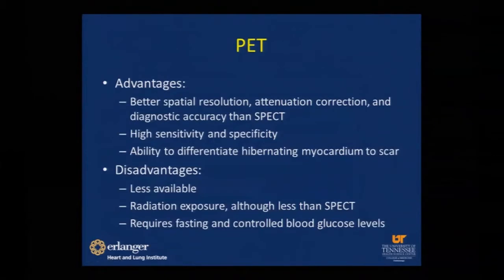Cardiac PET has better spatial resolution, attenuation correction, and diagnostic accuracy than SPECT, with higher sensitivity and specificity and the ability to differentiate hibernating myocardium from scar. The disadvantage is PET is not widely available, radiation exposure is less than SPECT, and it requires fasting and controlled blood glucose levels, which can be challenging in patients with uncontrolled diabetes.